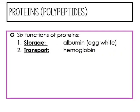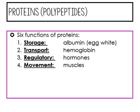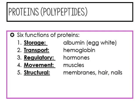Proteins transport — hemoglobin is an example of that. They're regulatory, so hormones would be the example for that. Movement — muscles are made up of protein. Structural — proteins make membranes, hair, and nails. And last but not least, enzymes, which are responsible for cellular reactions.